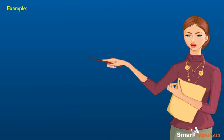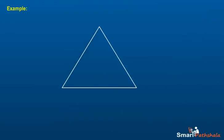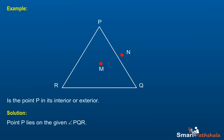Example. Draw a rough sketch of triangle PQR. Mark a point M in its interior and a point N in its exterior. Is the point P in its interior or exterior? Point P lies on the given triangle PQR.